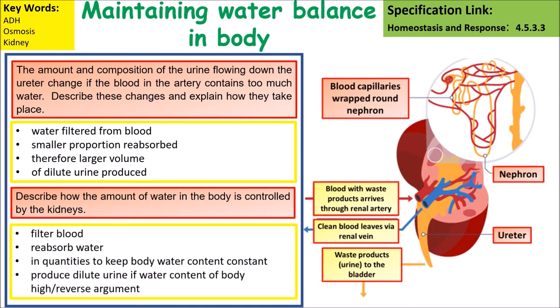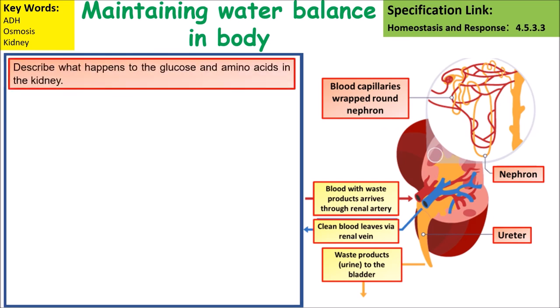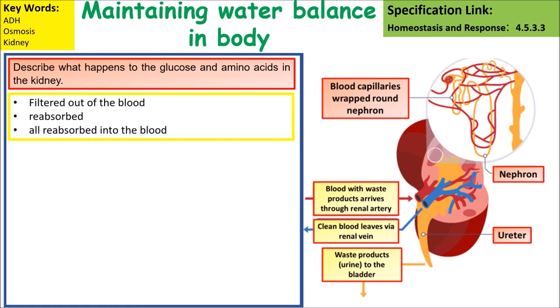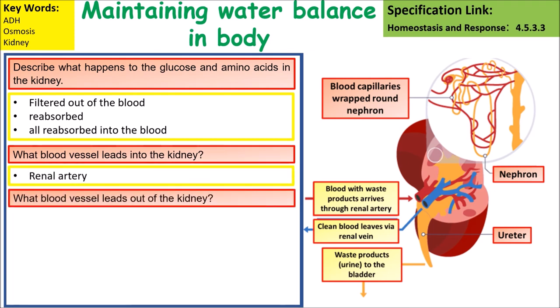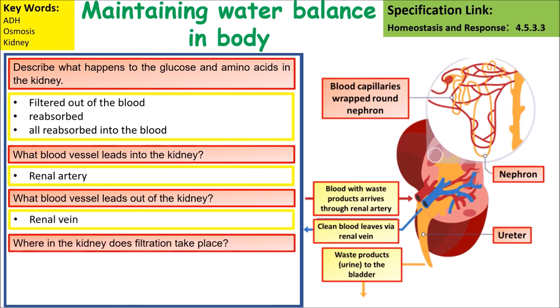To describe how the amount of water in the body is controlled by the kidneys, you need to talk about the blood being filtered and water being selectively reabsorbed. Glucose and amino acids are filtered out first, then reabsorbed back into the blood. The blood vessel leading to the kidneys is the renal artery; the blood vessel leading out is the renal vein. Filtration takes place in the nephron.